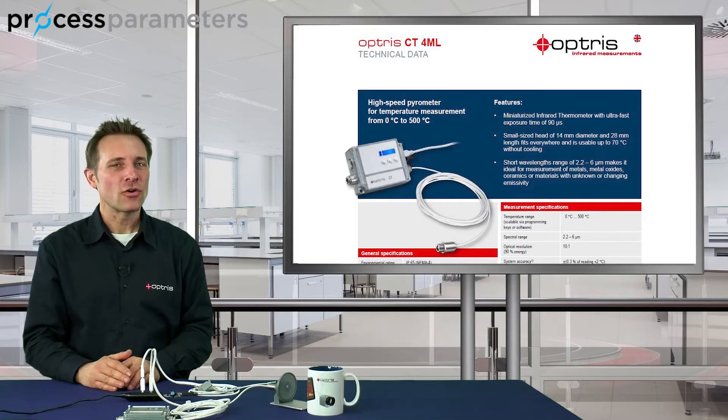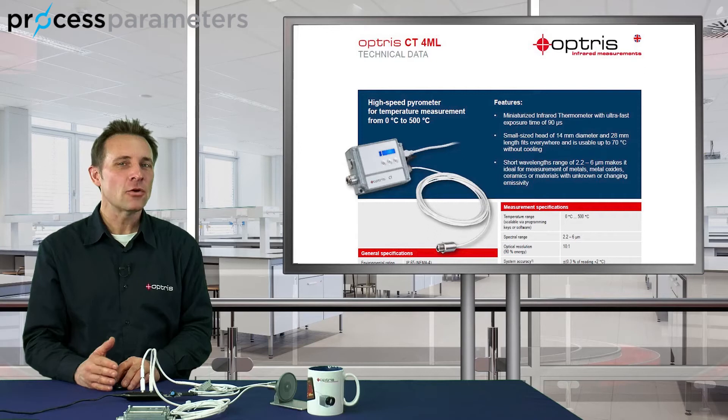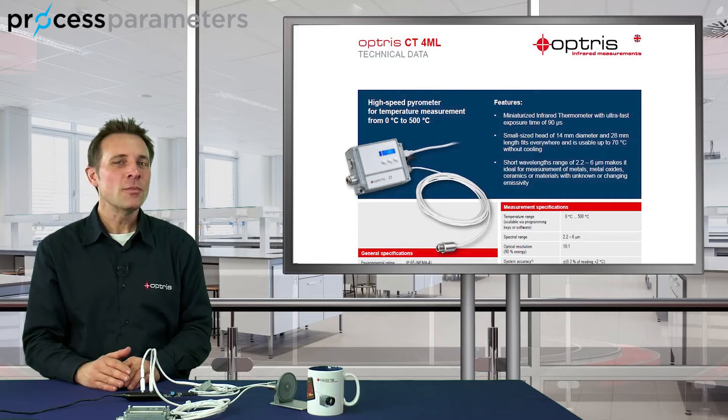With a short wavelength range of 2.2 to 6 micrometers, the CT4ML is perfect for measurements of metal, metal oxides, ceramics, or materials with unknown or changing emissivity.